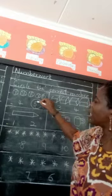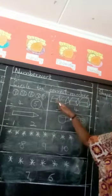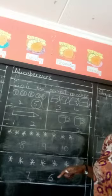Let's count the boxes. One, two, three, four. Are the boxes three? No. Are the boxes four? Yes. So we are going to circle number four.